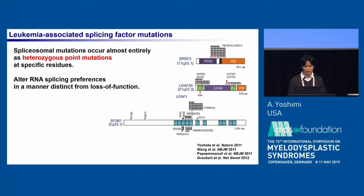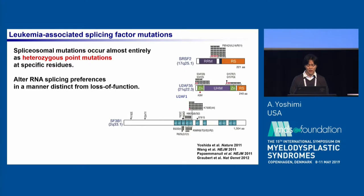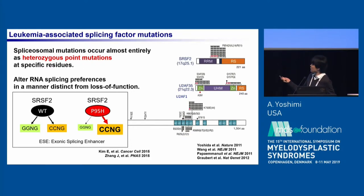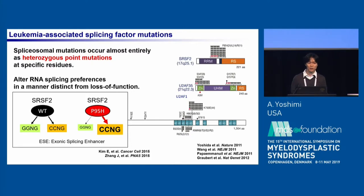This observation suggests that this mutation alters RNA splicing preferences in a manner distinct from loss of function. Actually, this mutation alters splicing in a sequence-specific manner. SRSF2 mutant preferentially recognizes CCNG motif over GGNG motif in exonic splicing enhancers, which causes global splicing changes.